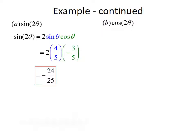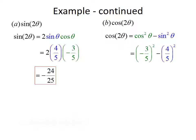Next, the cosine of 2 theta. Using the double angle formula, cosine of 2 theta equals cosine squared theta minus sine squared theta. Plugging in our values, we get negative 3 fifths squared minus 4 fifths squared, which simplifies to 9 over 25 minus 16 over 25, giving us negative 7 over 25.